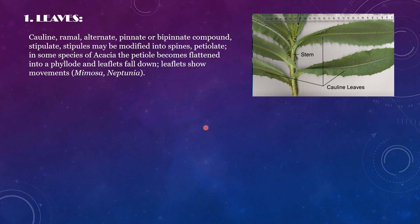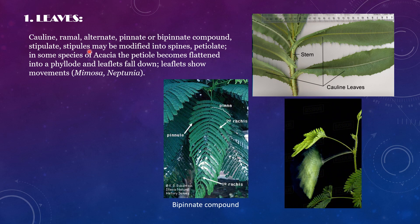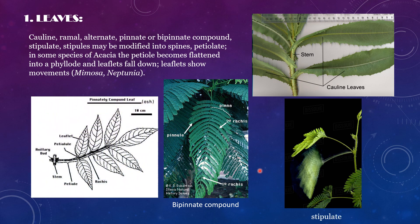The leaves are alternately arranged on the stem and can be pinnate or bipinnate compound leaves. They are stipulate, having stipules which are sometimes modified into spines like in Acacia. In some species of Acacia, the stipule becomes flattened into a phyllode and leaflets fall. Leaflets show movement like in Mimosa and Neptunia, which usually show sleep movements.